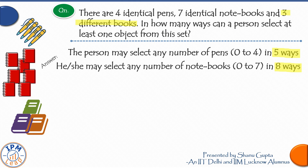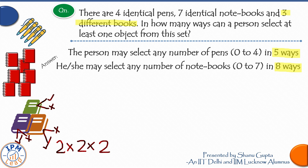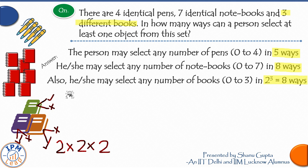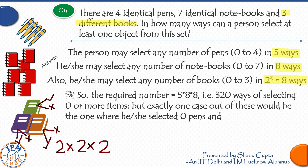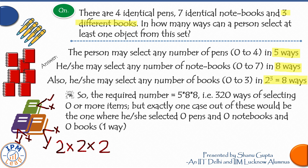Now suppose three different books are also added to the set. Since all three books are distinct, each can individually be selected or rejected — giving 2³ = 8 ways. The required total is now 5 × 8 × 8 = 320 ways of selecting zero or more items. Subtracting the one case where zero pens, zero notebooks, and zero books are selected: 320 − 1 = 319 ways.